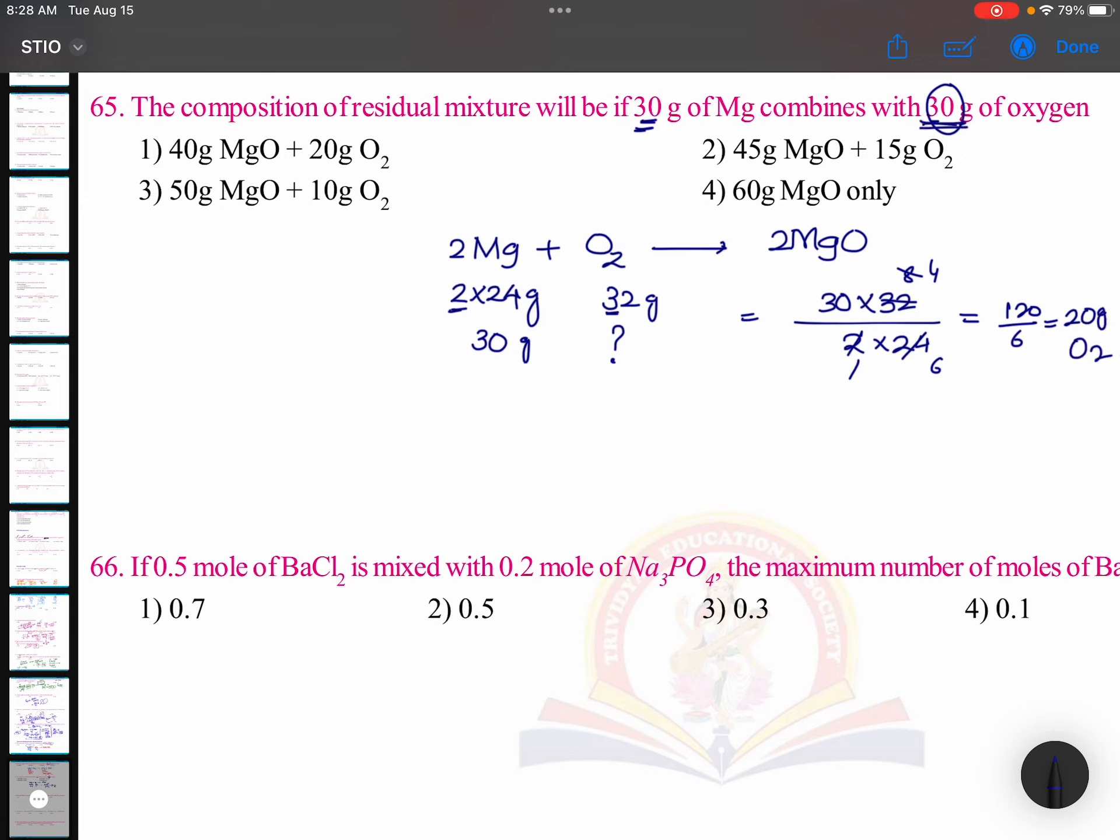But how much is given to you? 30 grams. 30 grams is supplied but 20 grams is enough, means 10 grams of O2 is left. 10 grams of O2 is left. So this is not your answer, this is your answer.